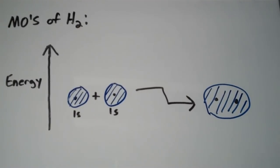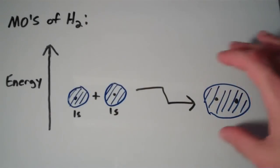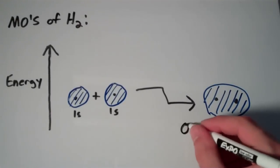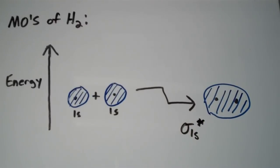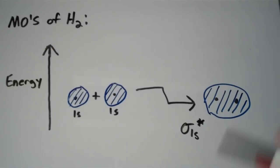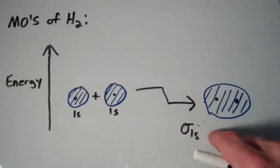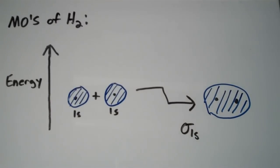So I have two small spherical blobs that form this sort of egg-shaped blob, and this molecular orbital is called the sigma 1s molecular orbital. The letter sigma comes from the shape of the orbital — it's shaped like a sigma bond in valence bond theory. The '1s' comes from the fact that it's a linear combination of two 1s orbitals. This is the sigma 1s orbital, and it's called a bonding molecular orbital.